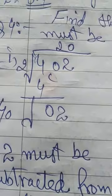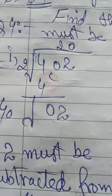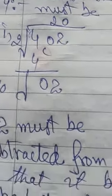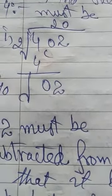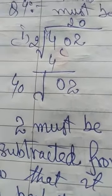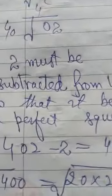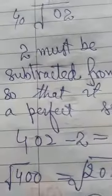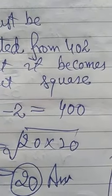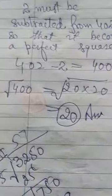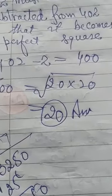Look, I have my notebook, pencil, and pen. First make pairs for 402 as I showed you yesterday: 2-2-0-4. Then zero and two come down. I write zero here because 20 into 20 equals 400. What remains? 2 remains. So we must subtract 2 from 402 so that it becomes a perfect square. This equals 400, square root 20 into 20.